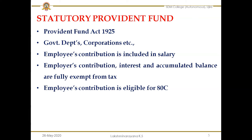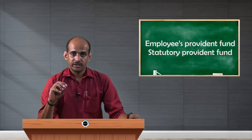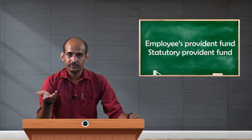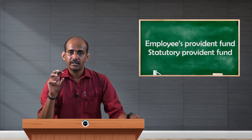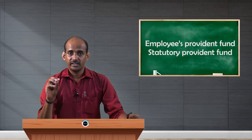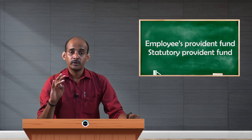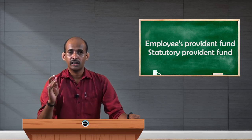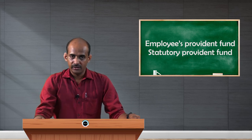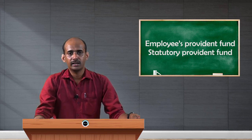The second important provision is about the employer's contribution. The employer's contribution is exclusive of salary — it is in addition to salary. The employer's contribution, the interest received from this account, and the accumulated balance at the end of the term — for example at the time of the employee's retirement — all three amounts are fully exempt from tax. When it comes to taxability, these three amounts — the employer's contribution, the interest received, and the accumulated balance — are all exempt from tax and can be fully enjoyed by the employee. That is the beauty of this fund, which is highly beneficial for employees working in government departments.